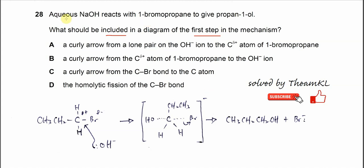Question 28. Aqueous sodium hydroxide reacts with 1-bromopropene to give propene 1-ol. What should be included in a diagram of the first step in the mechanism?